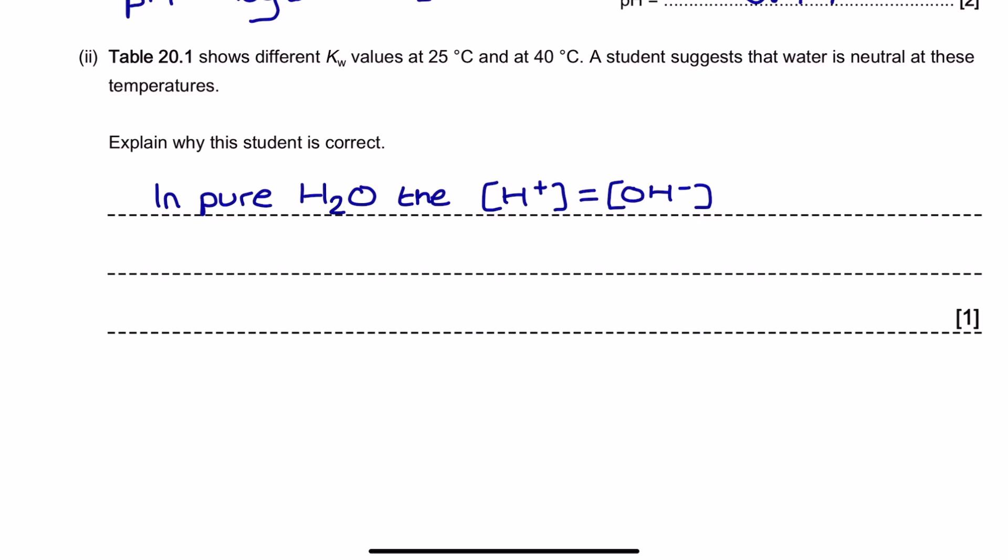Next up, and the question is pointing out that the KW values are varying with temperature, and a student has suggested that the water is neutral at these temperatures. Well, this takes me straight back to that multiple choice question that we've seen before, and a bit of a common question in the OCR exams. We can see here that we are confirming the student is correct by saying that the water is still neutral at the different temperatures, because we know a neutral solution is going to have an H plus ion concentration which equals its OH minus ion concentration.